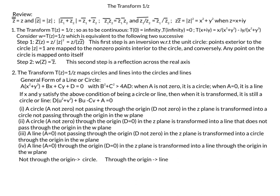The transformation t of z equals 1 over z maps circles and lines into circles and lines. We show this by looking at the general form of a circle or line given by this equation. If a equals zero, you have a line; if a is nonzero, you have a circle. When points satisfying this condition are plugged into t of z equals 1 over z, we get back the same form, so circles and lines are mapped to circles and lines.